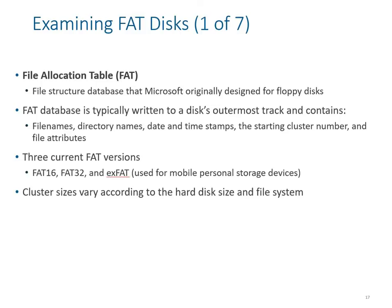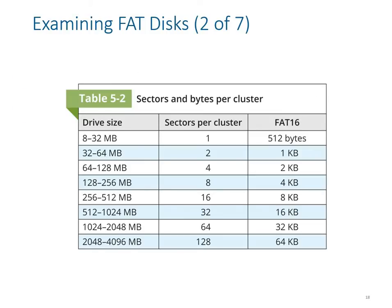Most advanced forensic software handles these details automatically, showing the starting and ending points of sectors. When examining a FAT disk with respect to drive size and sectors per cluster: a drive size of 8 to 32 MB typically resides in FAT16 with 512 bytes per sector, and larger capacity drives can be managed as cluster counts increase.